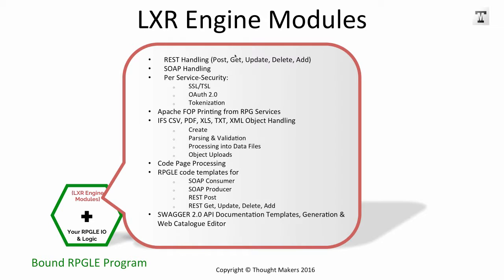Drilling further into the application, the modules consist of around 70 or 80 — and these evolve as requirements change — covering things such as REST handling for POST, GET, UPDATE, DELETE, and ADD; SOAP handling; per-service security including SSL, TLS, OAuth, and tokenization. There's a built-in tokenization mechanism so you can expose your APIs as a full committed gateway. It integrates with Apache FOP for printing, does CSV, PDF, XLS, Excel spreadsheets, XML object handling for creation, parsing and validation, processing into data files, object uploads, and code page processing including double-byte character sets. RPG code templates allow developers to select a use case — for example, a SOAP consumer — start from that template, add their code, compile, and off they go. Also included are Swagger 2.0 API documentation templates, a generation automation tool, and a web catalogue editor.